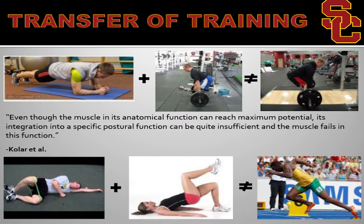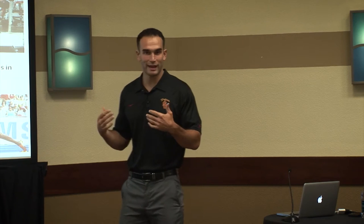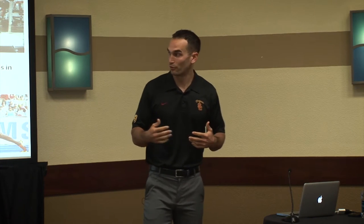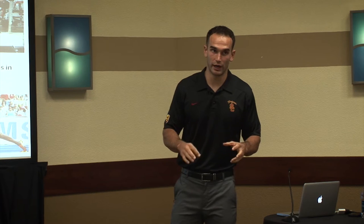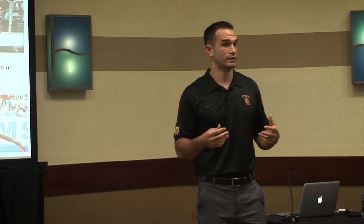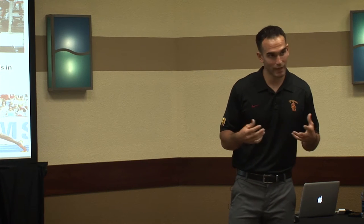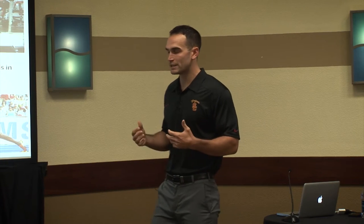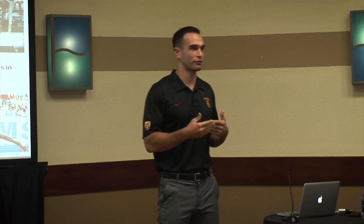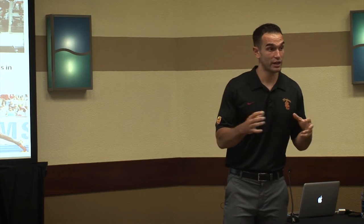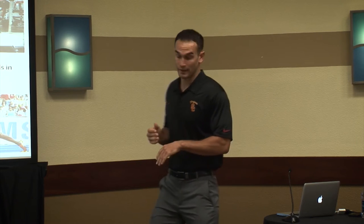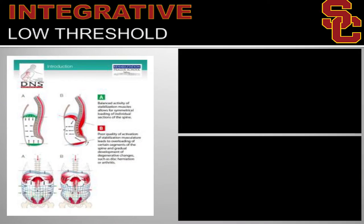The bottom pictures show a sideline clamshell, a one-leg hip bridge, and Usain Bolt sprinting. I get from athletic trainers: 'the athlete can activate their glutes' — clamshell, glute on; hip bridge, glute on. Does that mean they'll stand up, do something aggressive, and utilize their glutes? I think it's deeper than that. We need to work integrative patterns into this to make that transfer smoother.